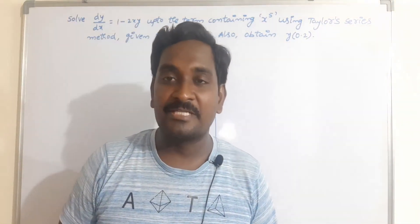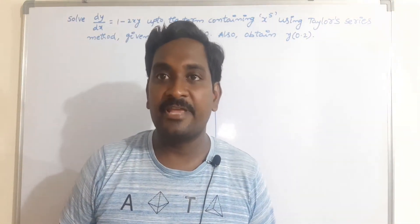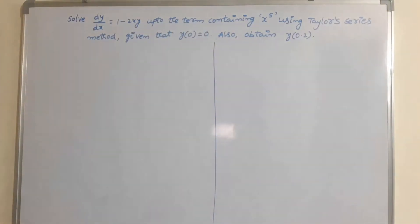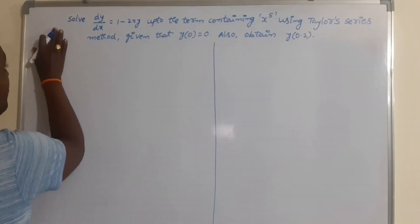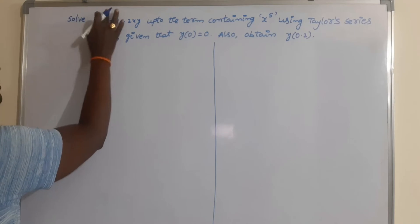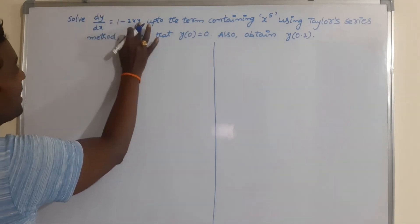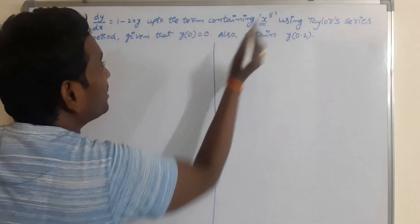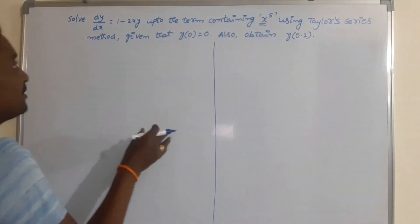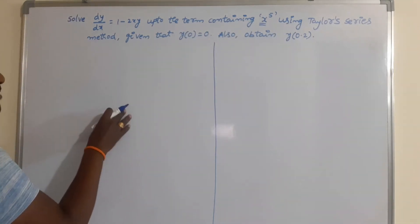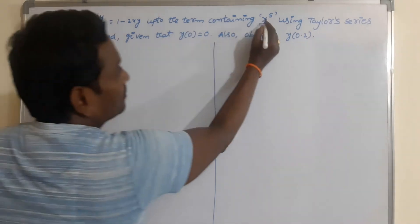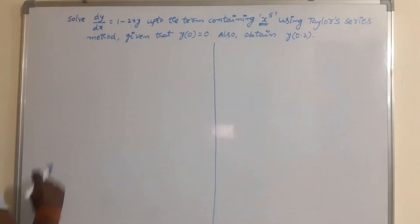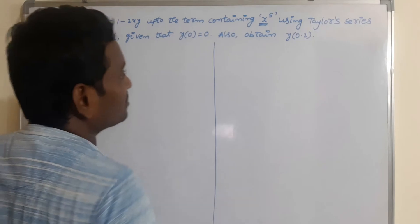Hi everyone, welcome back to our channel. In this video I will give you another example on the Taylor series method. The problem is: solve dy/dx = 1 minus 2xy, up to the term containing x power 5. We have to find the solution in series form using the Taylor series method, given that y(0) = 0.